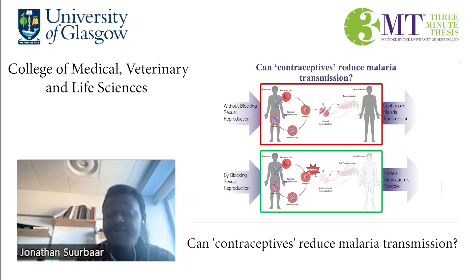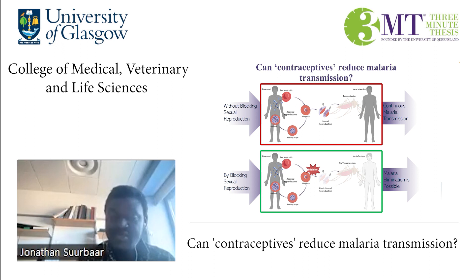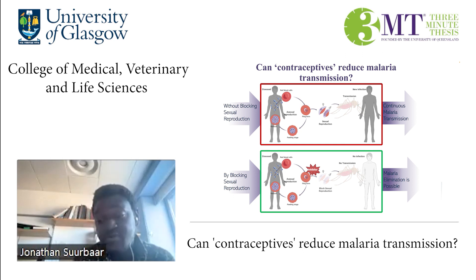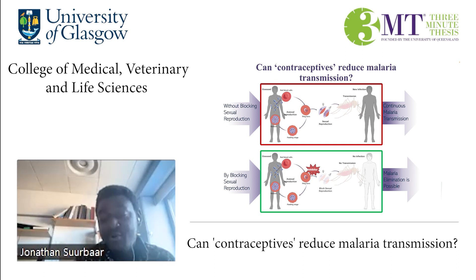With the aim that if we are able to find inhibitors that can block this sexual development — like contraceptives — can stop the development of the parasite in the sexual stage. So in the future, in partnership with other drugs that kill the asexual forms, these contraceptives that we are trying to develop can stop malaria transmission. Hopefully, by the time my PhD ends, I may be able to find some contraceptives that can make these parasites less sexual and more asexual.